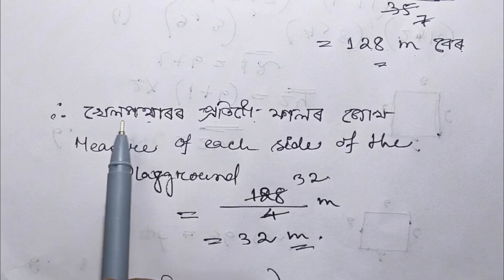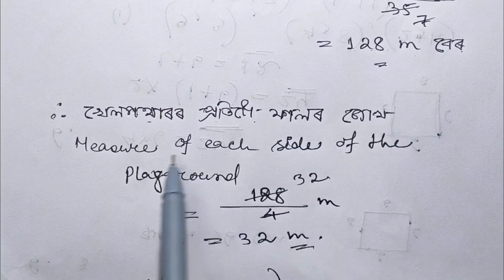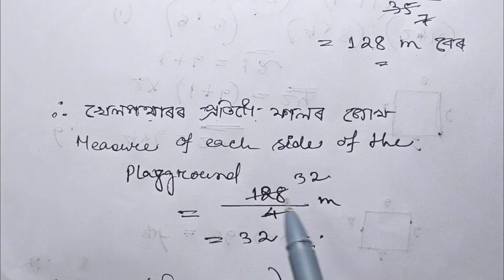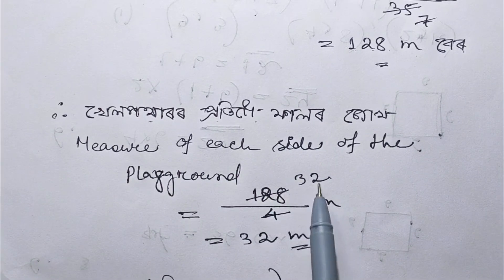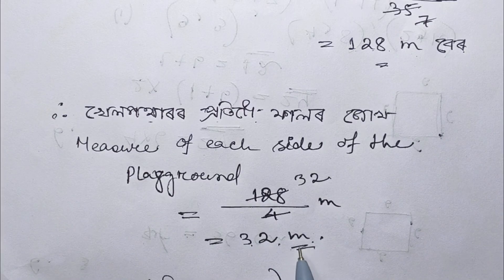The perimeter of the square playground is 128 meters, so the length of one side is 32 meters.